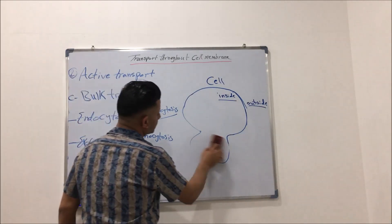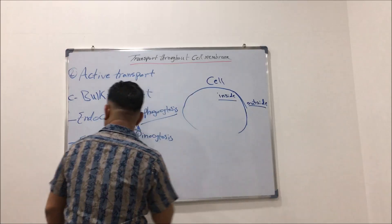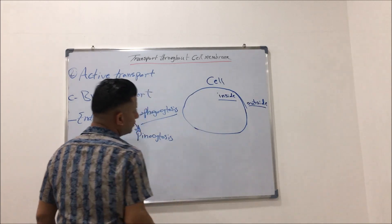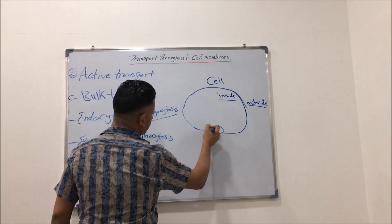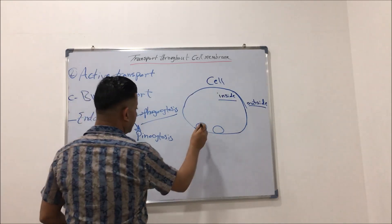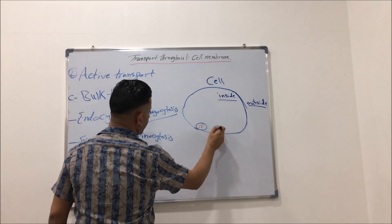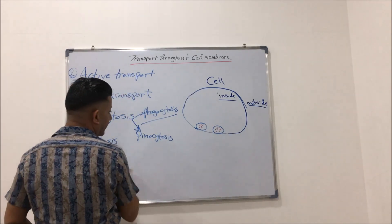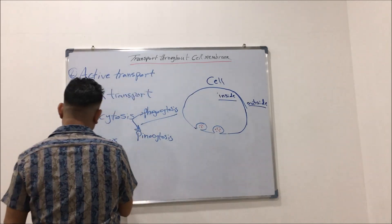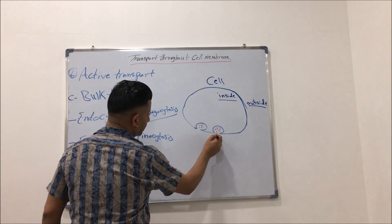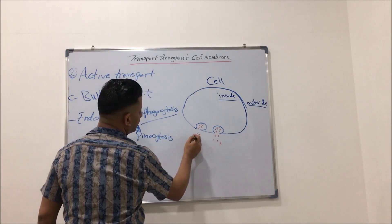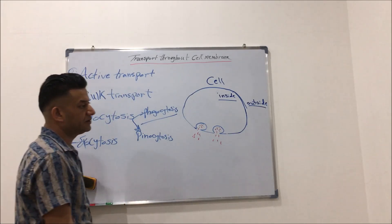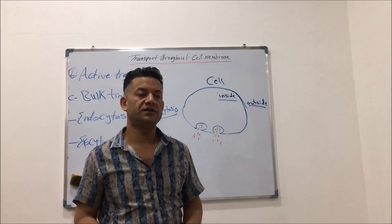Exocytosis means when the cells expel or release some substances to outside the cell. For example, in neurons, the vesicles inside the cells that contain neurotransmitters will first fuse with the cell membrane from inside, then open to the outside, and the neurotransmitter is released to outside the cell by exocytosis. That's all for today. Thank you so much for listening.